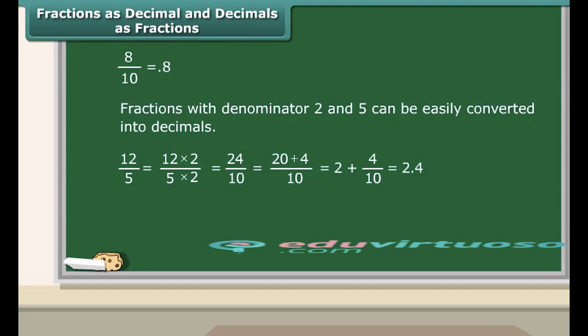Consider another example. Convert 3 upon 2 into a decimal. The denominator of the fraction is 2. To know the number of tenths involved, multiply and divide the fraction by 5. Thus, the new fraction is 15 upon 10. So we have 1 and 5 tenths, which make it 1.5.